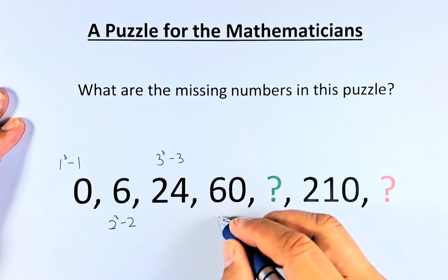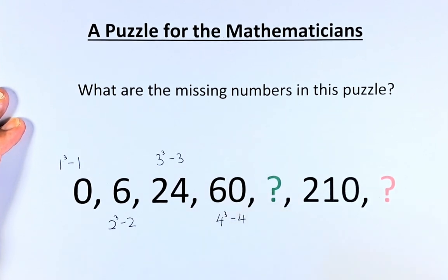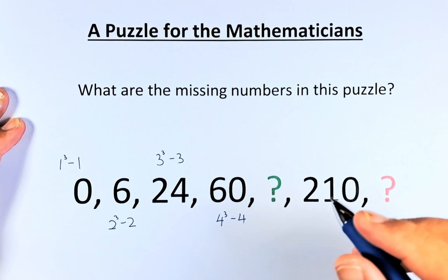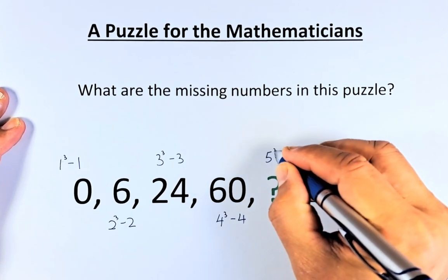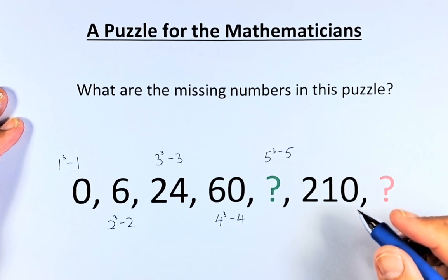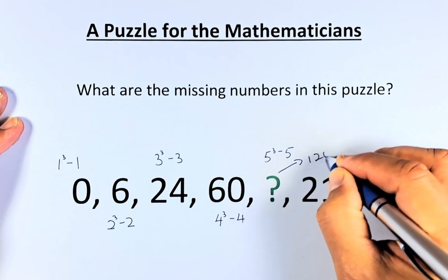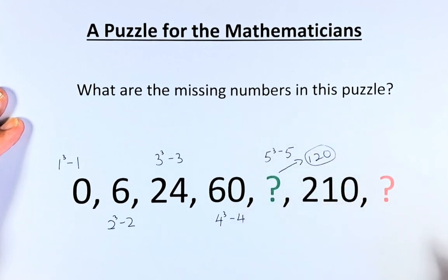What is the next number? 60 is going to be 4 cube. You can see the pattern minus 4. 4 cube is 64, 64 minus 4 is 60. So what is the green question mark? It's going to be 5 cube minus 5. 5 cube is 125 minus 5 and the green question mark is going to be 120. Hope you got that right.